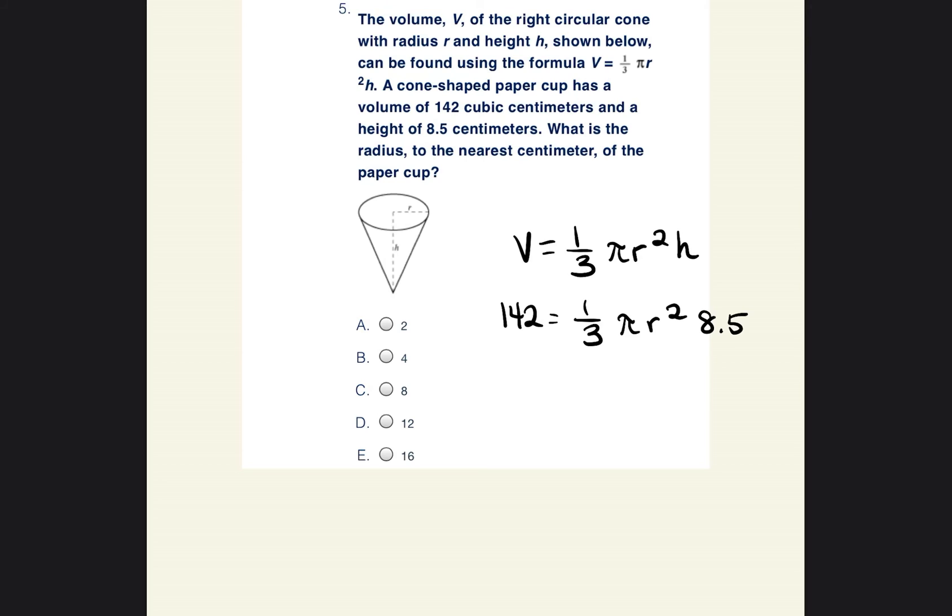So they want us to go ahead and solve for the radius. So I'm going to go ahead and get my calculator because I'm not going to be above using a calculator, and you are allowed to use your calculator on the ACT. Okay, so what we have to do is we're going to just remember that whenever they're squished together, that means they're being multiplied. So we can multiply one third times 3.14 times 8.5. So let's go ahead and do that. So 1 divided by 3 times 3.14 times 8.5, that is equal to 8.8966667. And then we're going to leave R squared.